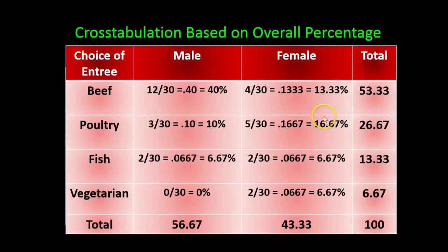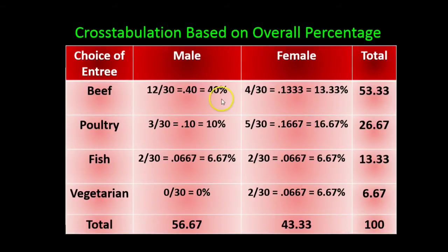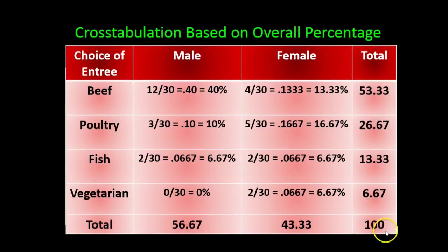Adding down the column of females gives 43.33 percent, and 56.67 plus 43.33 should add up to 100 percent. The same works across the rows: 40 percent plus 13 percent gives 53.33; 10 plus 16.67 gives 26.67; 6.67 plus 6.67 gives 13.33; and 0 plus 6.67 gives 6.67. Adding all the row totals — beef, poultry, fish, and vegetarian — gives 100 percent. So whether you go up and down or across, everything adds up to the grand total of 100 percent.